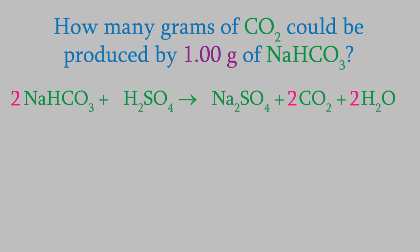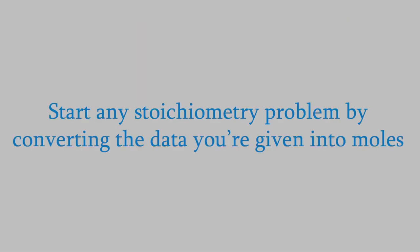We have 1.00 grams of sodium bicarbonate, and we want to know the mass of CO2 that we'll get. In the last video, I told you that it's easiest to work with moles instead of with grams, so a good first step is always to change the data you're given into moles. That's still true.